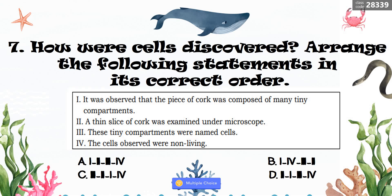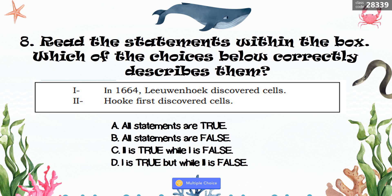Number eight: Read the statements — 1. In 1664, Leeuwenhoek discovered cells. 2. Hooke first discovered cells. Which choice correctly describes them? A. All statements are true. B. All statements are false. C. Two is true while one is false. D. One is true but two is false. The correct answer is letter C — two is true while one is false.